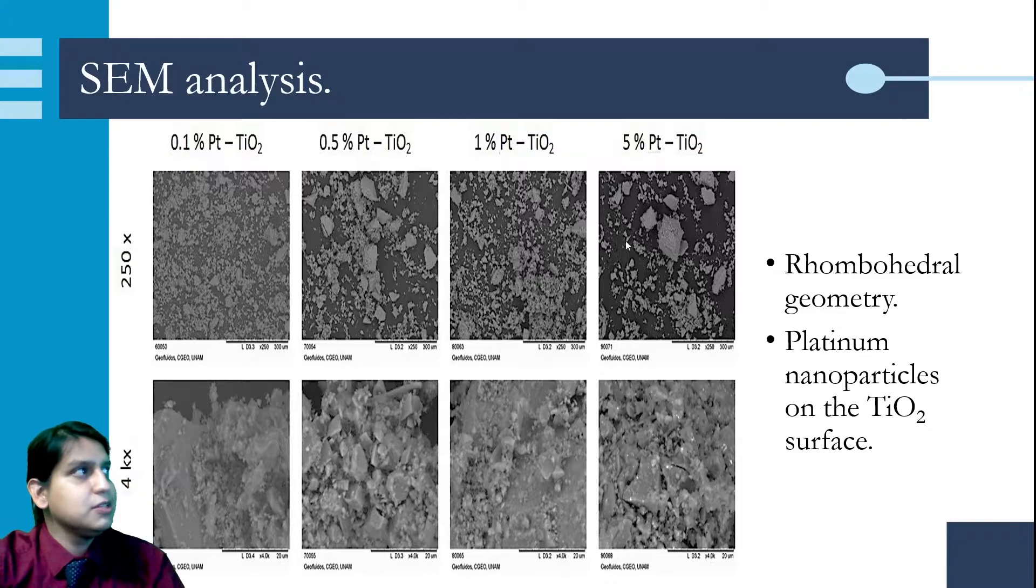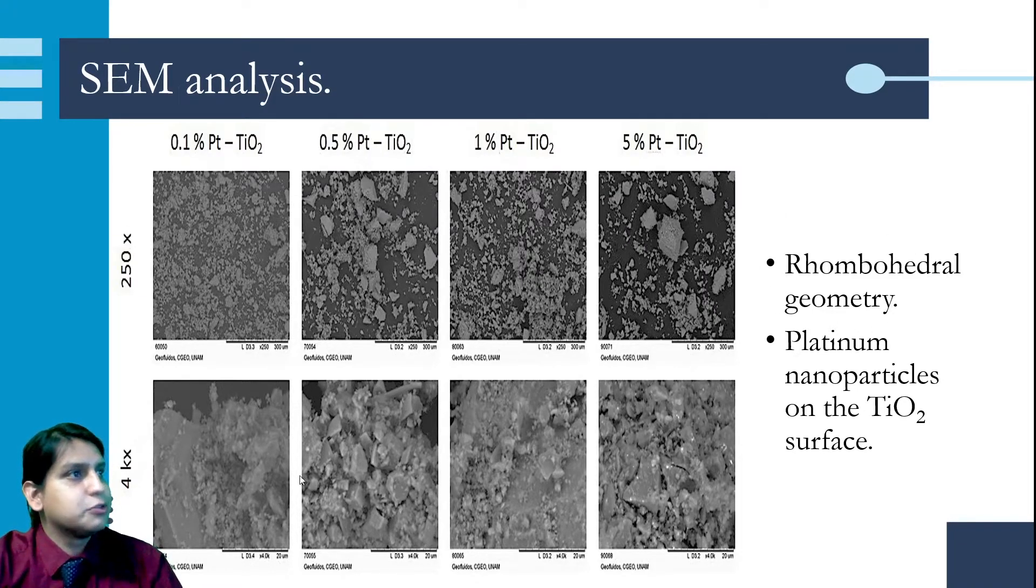Now for the SEM analysis, we can observe a rhombohedral geometry, and as we increase the platinum load in the material, we can observe an increase in the brightness on the surface of titanium dioxide that suggests platinum nanoparticles are supported on the titanium dioxide surface.